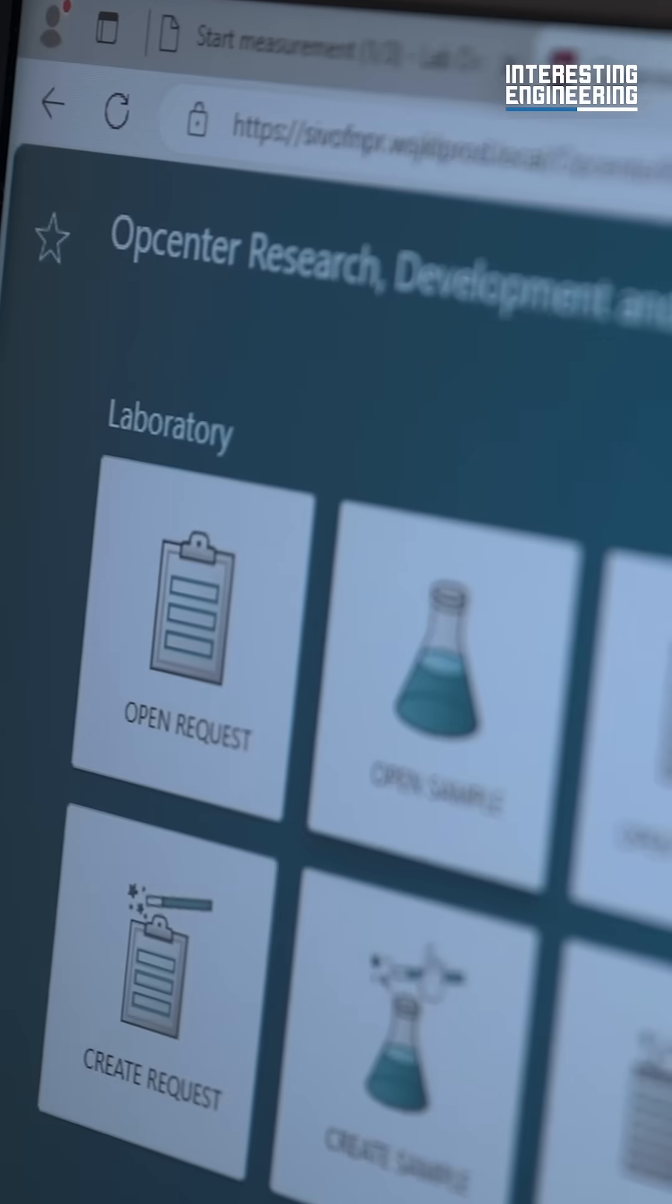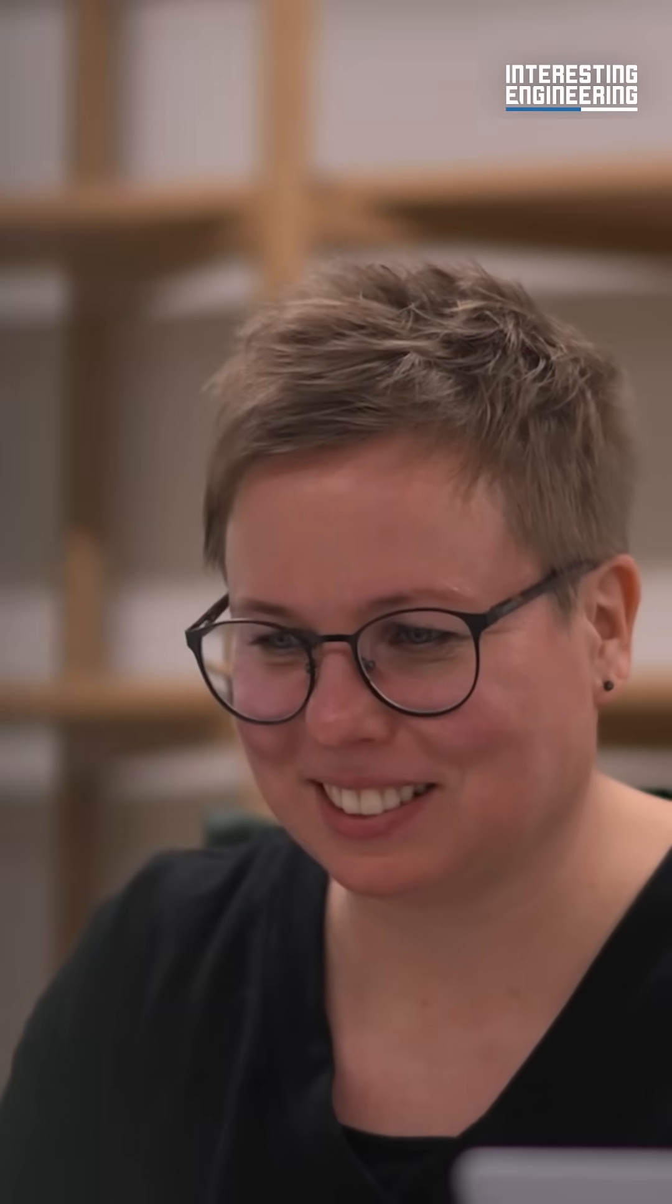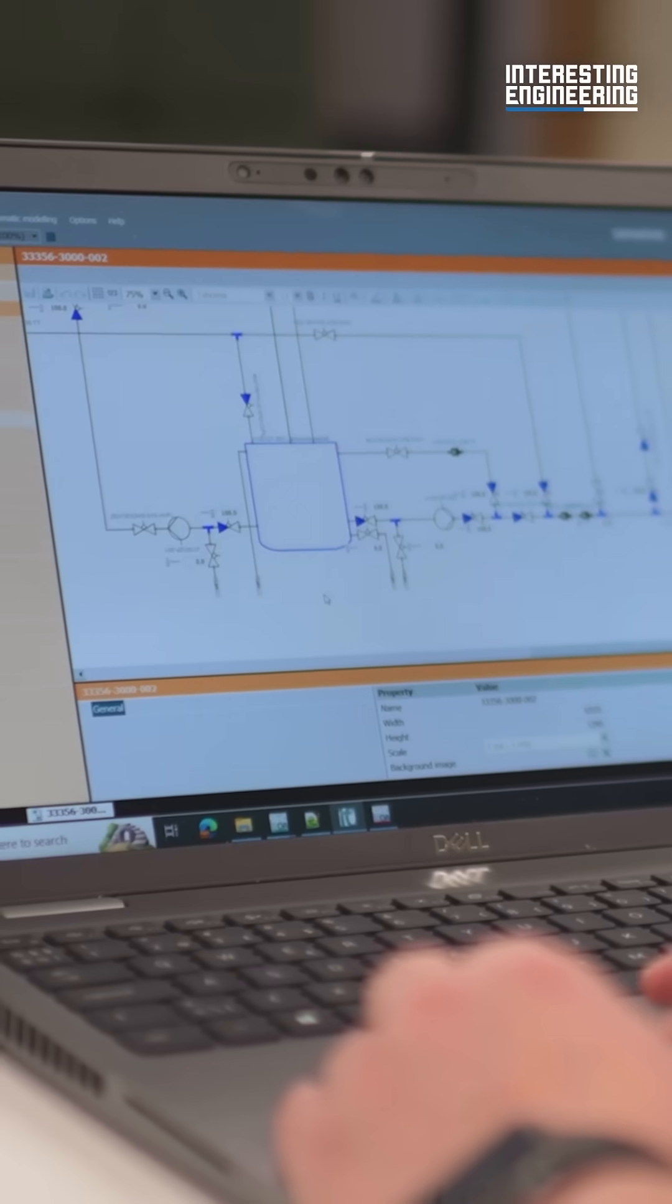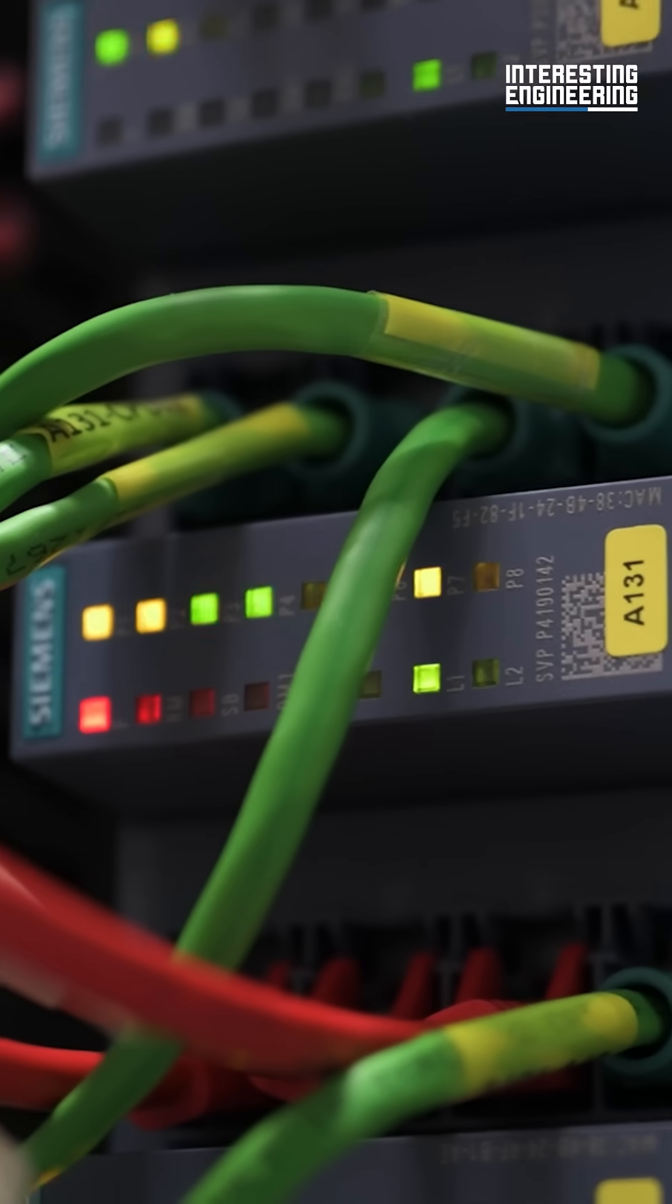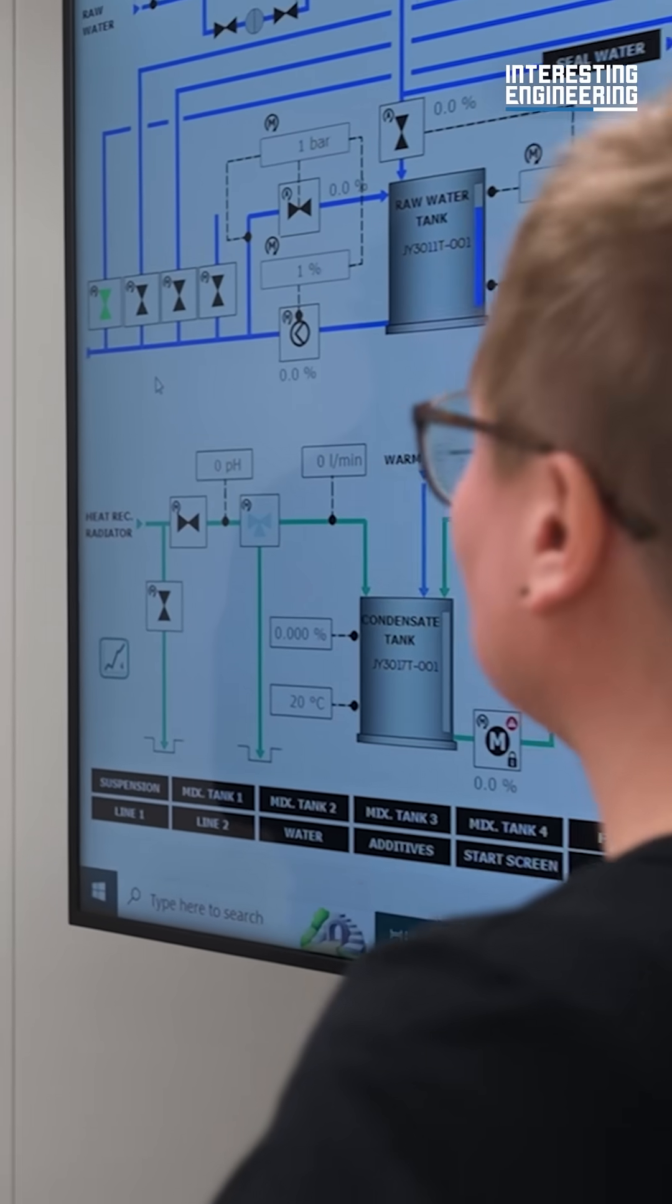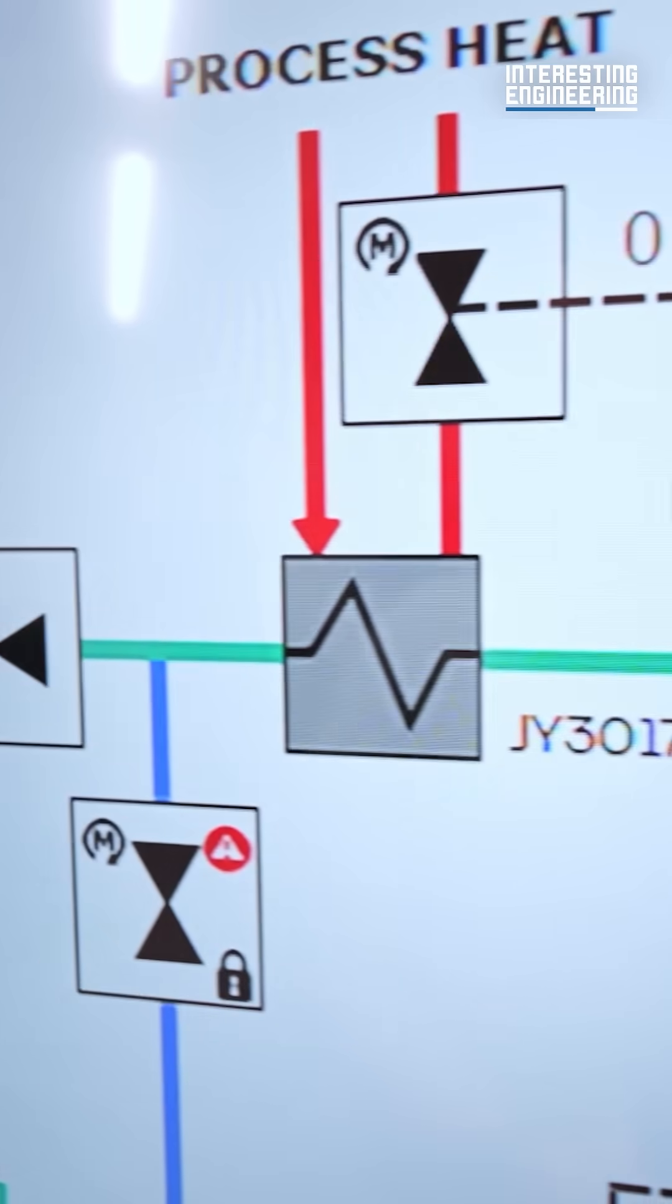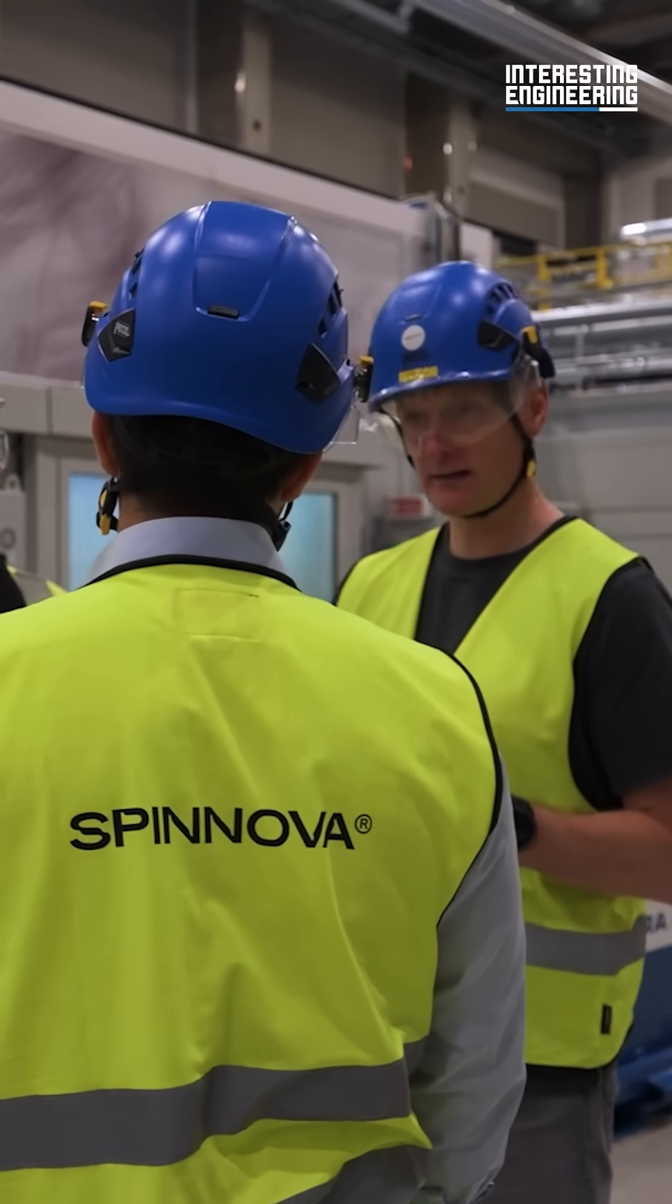Siemens' digital twin technology and intelligent factory management software plays a crucial role in Spinova's production. The digital twin includes all lines, machines, production areas, recipe information, and material flows. These simulations include what-if scenarios, optimizations, and bottleneck discovery to shorten the time needed to commission the factory and train operators before production started.